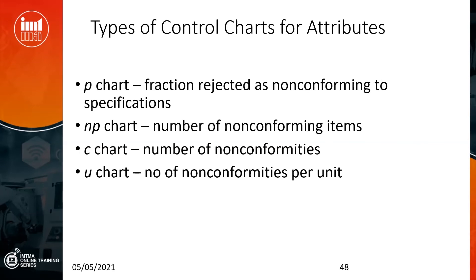Typically, the attribute charts used in industry are P charts, which is fraction rejects — and there is percentage P where you multiply the fraction by 100 to get a percentage. Then there is what is known as NP charts, where you multiply the fraction P by the number of non-conforming items. Then you can have a C chart, which is the number of non-conformities in a product. And a U chart, which is the number of non-conformities per unit. We will look at each of these, but we will go in more detail on the P chart, where we will actually do the chart ourselves so you get an understanding of how control limits are set and how the chart can be used.